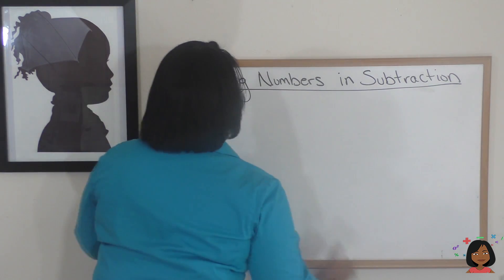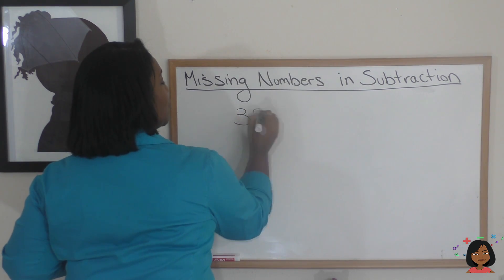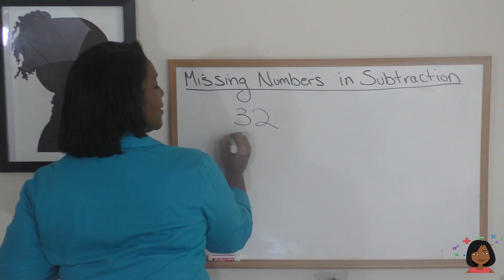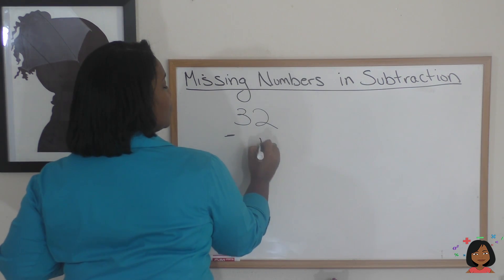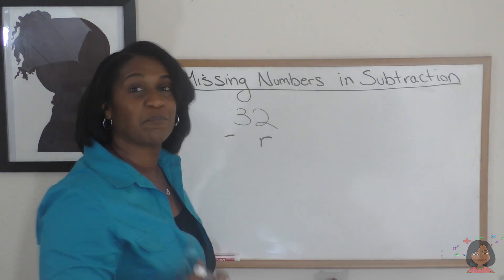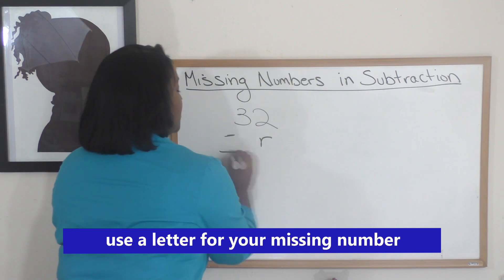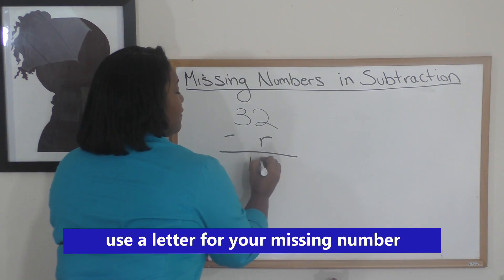Let's do 32 minus some number, I'm going to call that number r, because I don't know what that number is, equals 15.